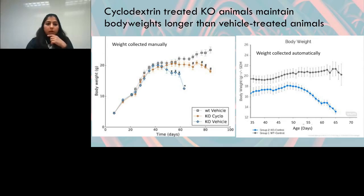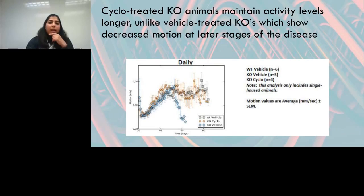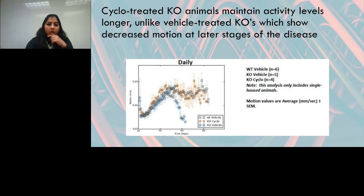For the cyclodextrin cohort, we dispensed with traditional behavioral assays and relied entirely on automated sampling to assess motor activity. Daily motion data expressed as velocity showed that vehicle-treated wild types and cyclodextrin-treated NPC nulls tended to overlap and were significantly different from vehicle-treated NPC mutant animals, which showed a clear decline in motor function with advancing age — demonstrating that cyclodextrin was able to rescue motor activity in NPC mutants.